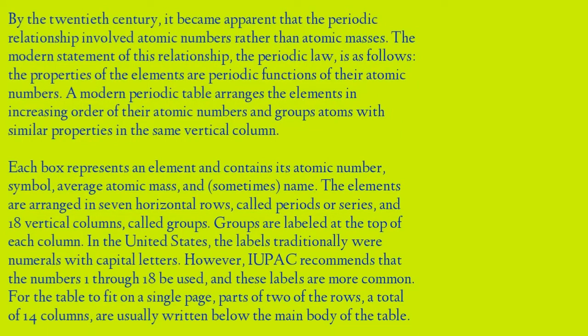By the twentieth century it became apparent that the periodic table relationship involved atomic numbers rather than atomic masses. The modern statement of this relationship, the periodic law, is as follows: the properties of the elements are periodic functions of their atomic numbers. A modern periodic table arranges the elements in increasing order of atomic number and groups atoms with similar properties in the same vertical column.